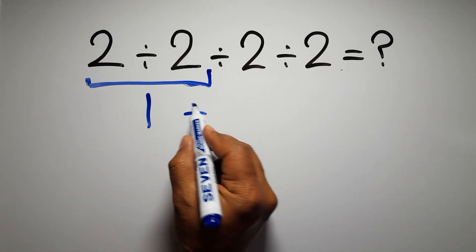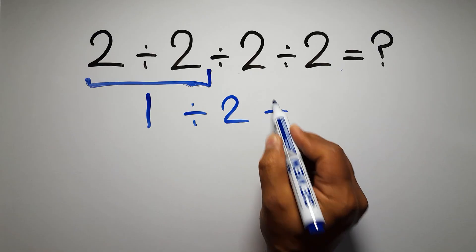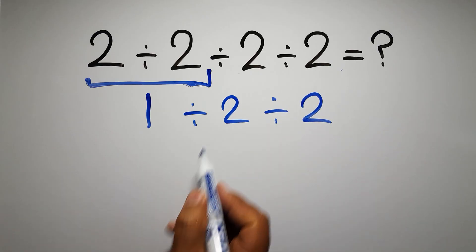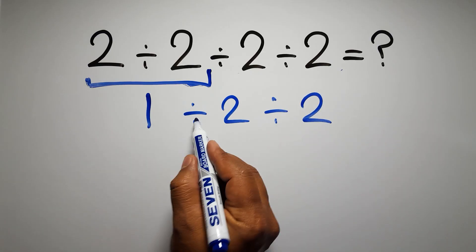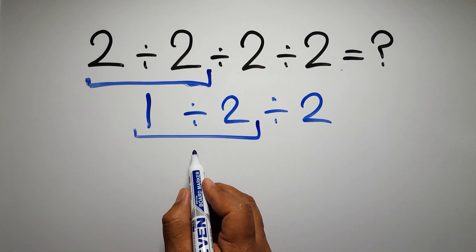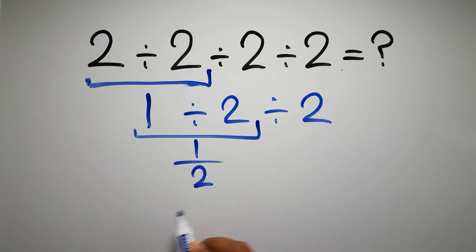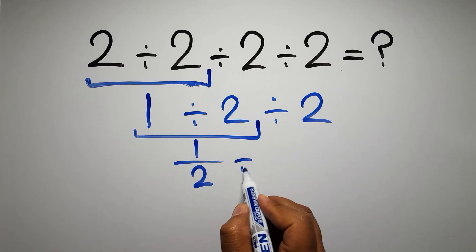So 1 divided by 2, and again divided by 2. Now we have to do this division. 1 divided by 2 can be written as 1 over 2, so 1 over 2 divided by 2.